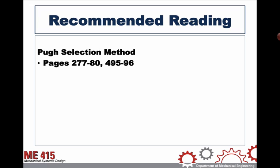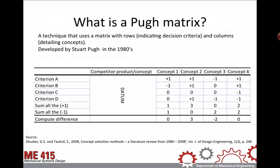If you'd like to learn more, you can find information on pages 277 through 280 of our text. The QFD decision matrix is discussed on pages 495 through 496, and we'll talk about AHP in a separate video.